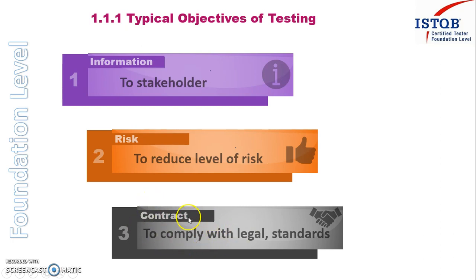The last objective is to check whether we are meeting all the contractual requirements. For example, if we committed to providing the customer five features, are we providing all five? We also have to ensure we are not violating any legal requirements of that particular country — whether in America, Germany, or elsewhere — since countries have different legal requirements and rules. Additionally, if you are following standards like CMMI or ASPICE, or industry-specific standards such as those in the automotive or avionics industry, we must check whether those standards are being followed.